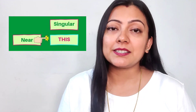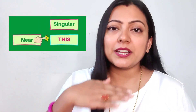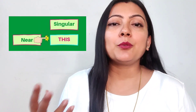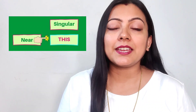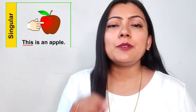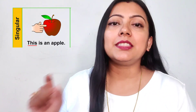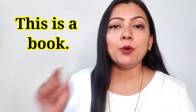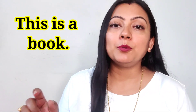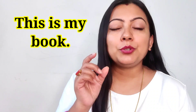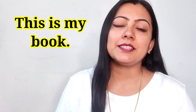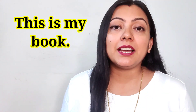First, let's understand 'this.' 'This' is used for the speaker — if there is a subject close to the speaker, or a current time reference. For example: this is a book, this is my book. It is a single object. 'This' refers to something near the speaker, like saying 'this is a great time.'